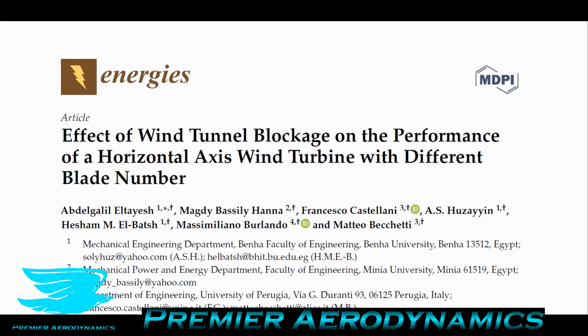A horizontal axis wind turbine is just a typical wind turbine that you see everywhere — it has a pole going up with blades coming out and it goes around and around.